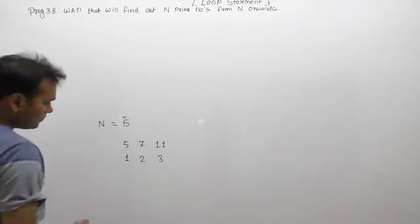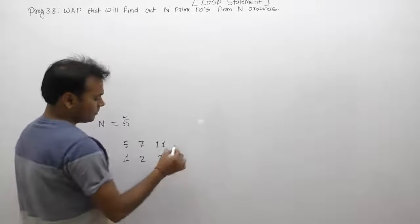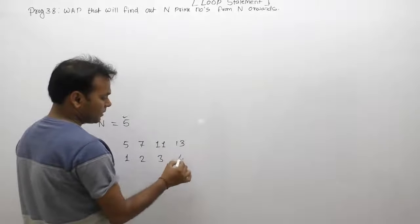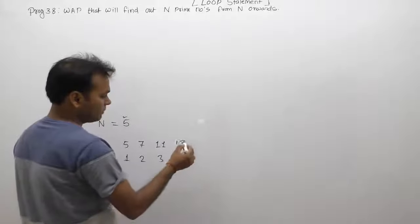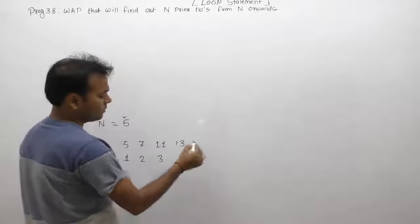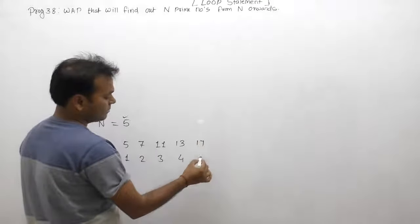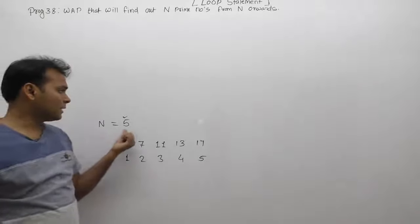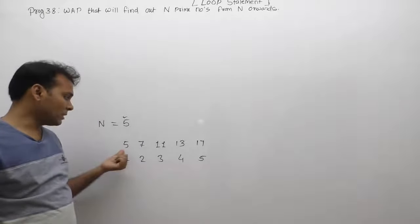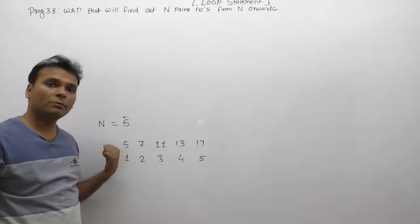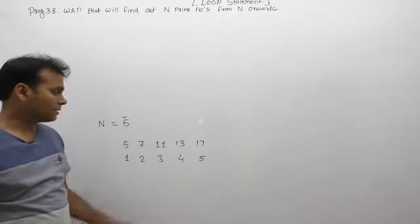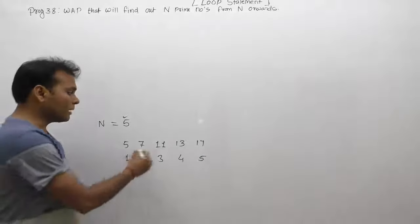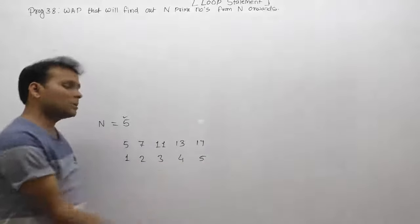Continuing: 13 counts as the 4th prime number. Then 15, 16 are not prime. 17 is a prime number. So the search starts from N onwards. If N's value is 5, then we start counting prime numbers from 5 onwards and continue until we have displayed N prime numbers total — in this case, 5 prime numbers.